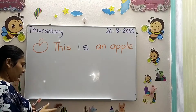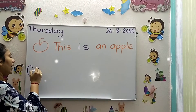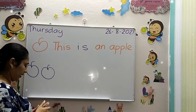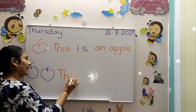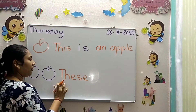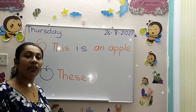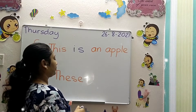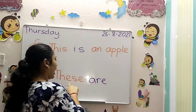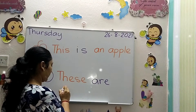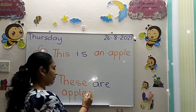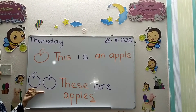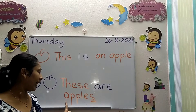Now I have more than one apple, so Teacher Shyam cannot use 'this' anymore. I will use T-H-E-S-E — 'these.' And I cannot use 'is'; I will use 'are.' These are apples. I use the letter S on 'apples' because it's more than one. These are apples.